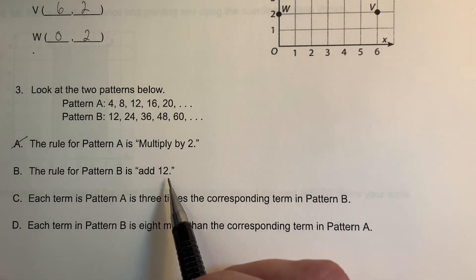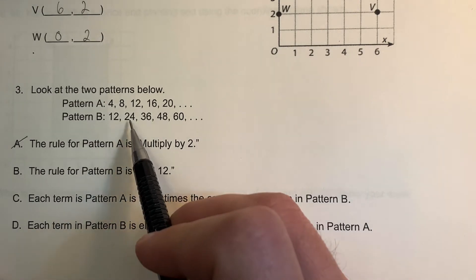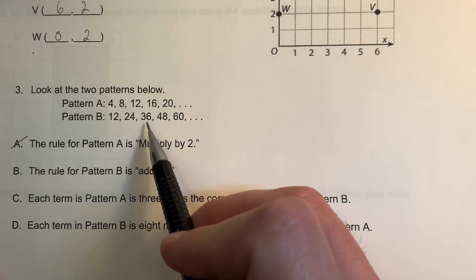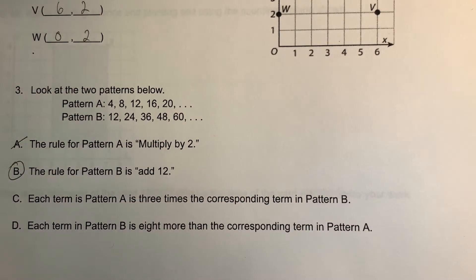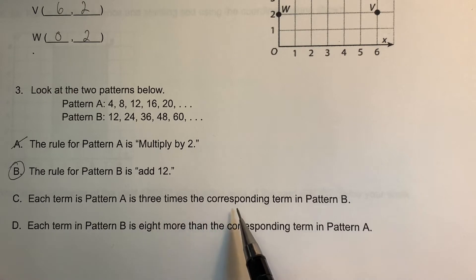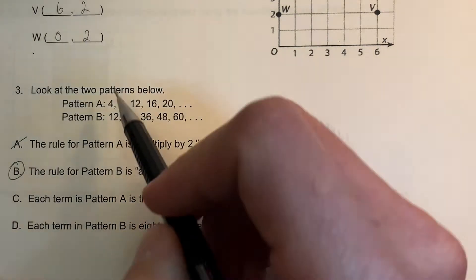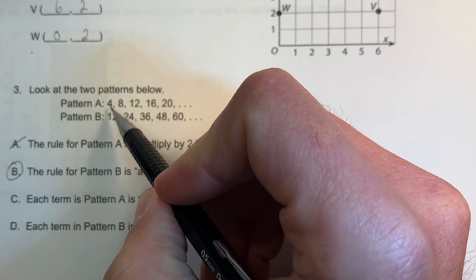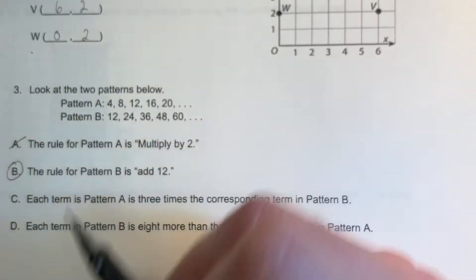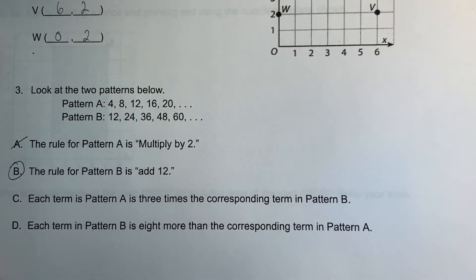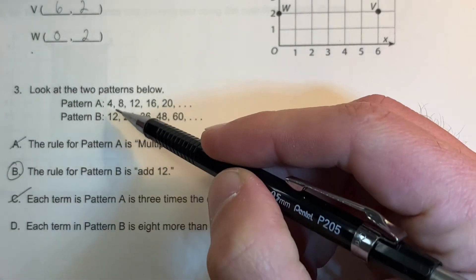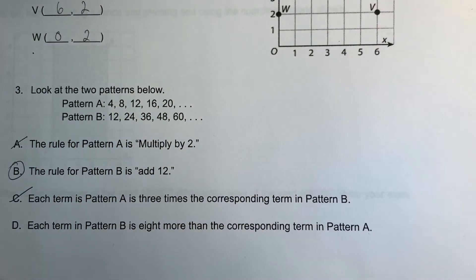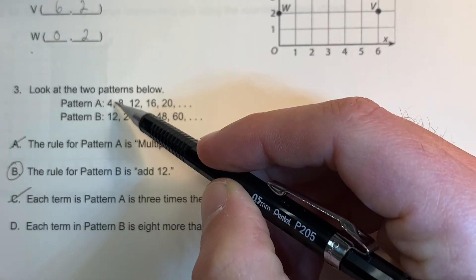The rule for pattern B is add 12: 12 plus 12 is 24, 24 plus 12 is 36, 36 plus 12 is 48, 48 plus 12 is 60 — so that's a good answer. Each term in pattern A is 3 times the corresponding term of pattern B: 12 times 3 is 36, not 4, so that is not correct. It could be one-third — A is one-third of B.